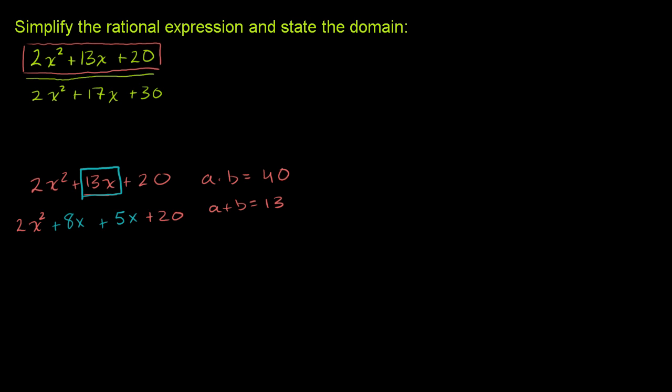And now we can group them. That's the whole point of factoring by grouping. So you group these first two characters right here. Let's factor out a 2x. So this would become 2x times, well 2x squared divided by 2x is just going to be x. 8x divided by 2x is going to be plus 4.